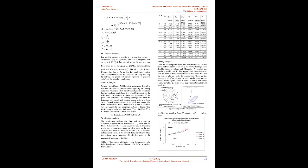Solution Scheme: For stability analysis, a nonlinear time transient analysis is carried out using the equations of motion to compute a new set of displacements and their derivatives for the next time step for a given set of mass parameter and particular viscosity parameter. The fourth-order Runge-Kutta method is used for solving the equations of motion. The hydrodynamic forces are computed for every time step by solving the partial differential equation for pressure satisfying the boundary conditions. A set of trajectories of journal center and bearing has been studied to construct trajectories for complete revolutions of the journal, with plots showing stability when the trajectory ends in a limit cycle.